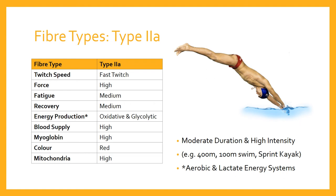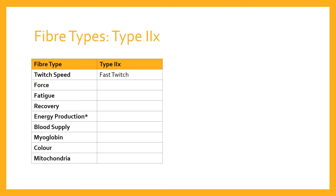Type two A fibres are relevant to anything of moderate duration but quite high intensity — events like the 400 metres, 100 metre swim, sprint kayak, and similar. These fibres can be used both as part of the aerobic system, because they are oxidative with lots of blood supply, and also in conjunction with the lactate energy system as intensity increases and lactate starts to build up.